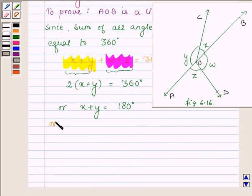Since the adjacent angles x and y at point O sum to 180 degrees, they form a linear pair.